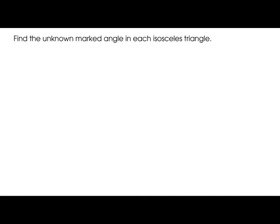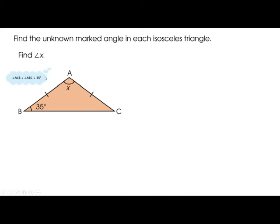Find the unknown marked angle in each isosceles triangle. Find angle X. We have 35 degrees given and the other base angle is unknown. Because it is an isosceles triangle — which has two sides of equal length — the two base angles are also equal. So: 180 degrees minus 35 degrees minus 35 degrees equals 110 degrees. The unknown angle X is 110 degrees.